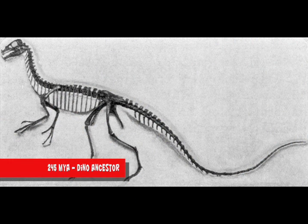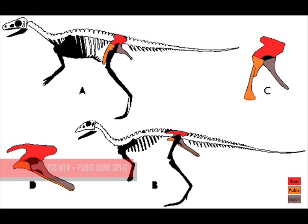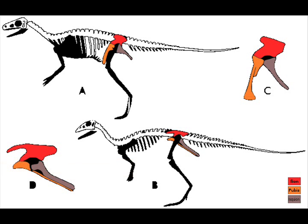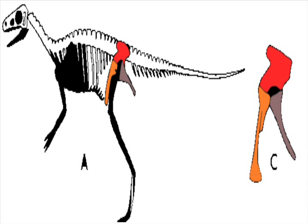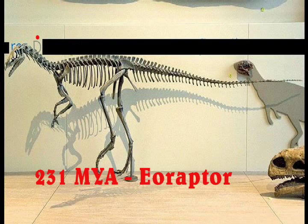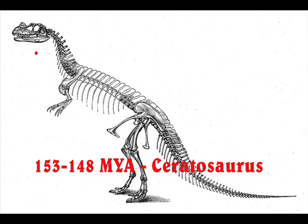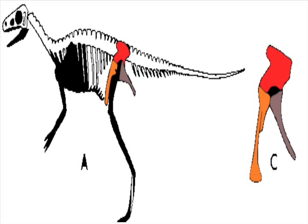The ancestor of all dinosaurs was a small lizard-like animal that could stand and move upright, about 245 million years ago. Around 235 million years ago there was a split between dinosaurs that kept their right-angled pubis bone and dinosaurs that evolved the parallel pubis bone. This group gave rise to dinosaurs such as Eoraptor.